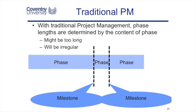In this video we're going to look at agile project management and compare it directly with traditional project management. In traditional project management, a project might be broken down into phases separated by key milestones. These phases might be of different lengths — irregular — perhaps a long phase, a short phase, and a longer phase. They're separated by important events where management approves progress to the next step.